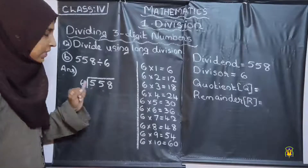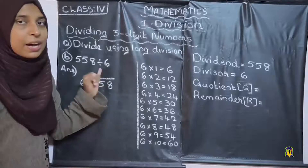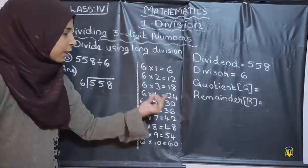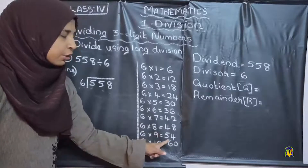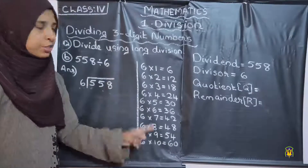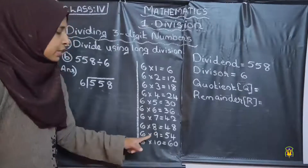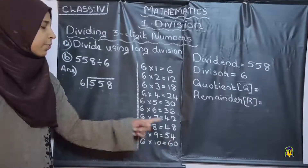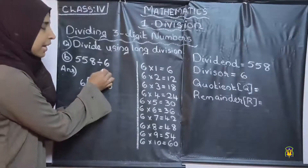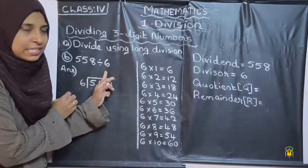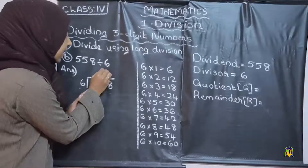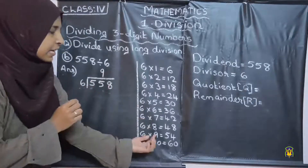Then check whether 6 into any number gives a product which is less than 55 and near to 55. Here, 6 into 9 is equal to 54, and 6 into 10 is equal to 60, which is greater than 55, so it is not possible to take 60. So we want to take 6 into 9 equals 54, since 54 is less than 55 and near to 55. So we can write 9 above the 10th place digit, because we are taking 2 digits. 6 into 9 is 54.